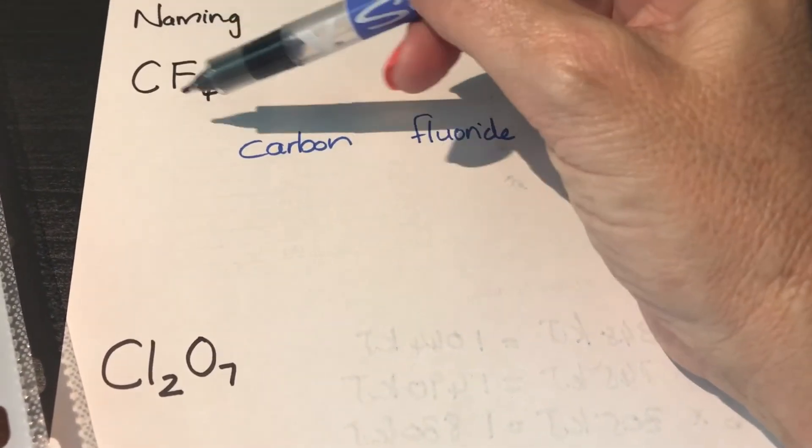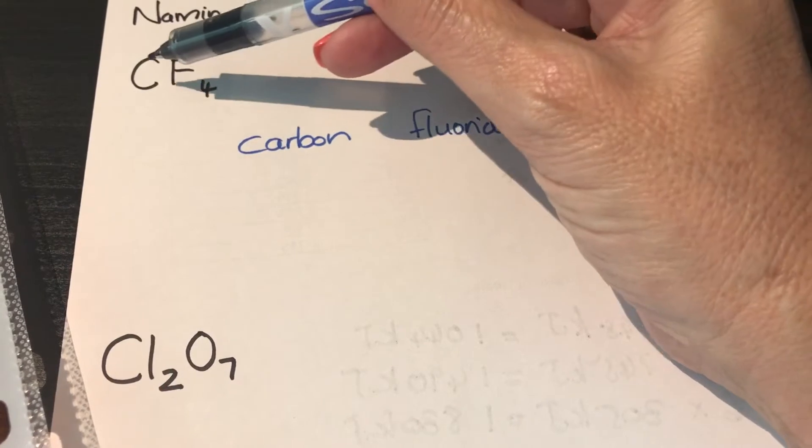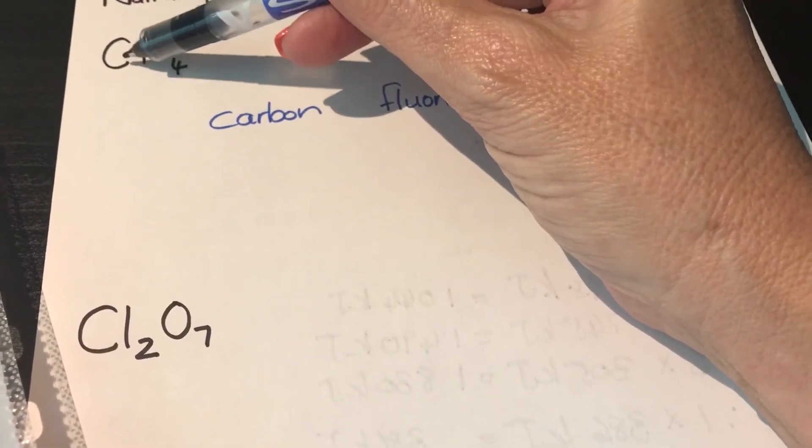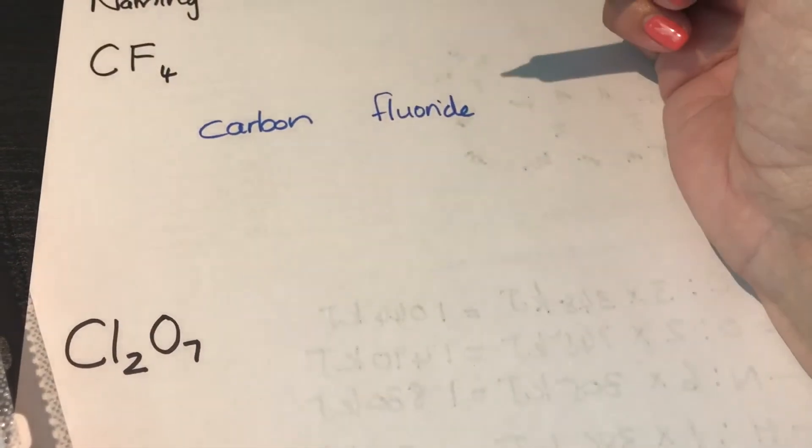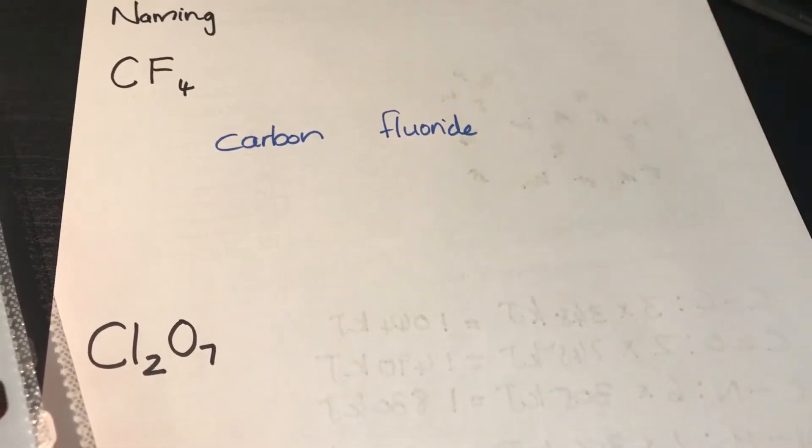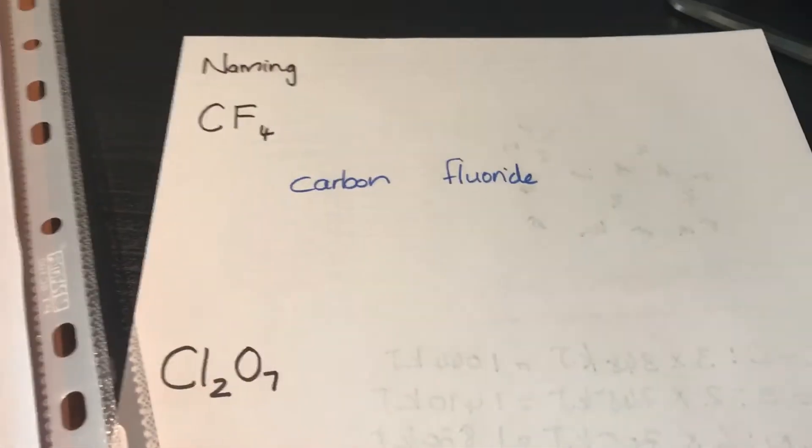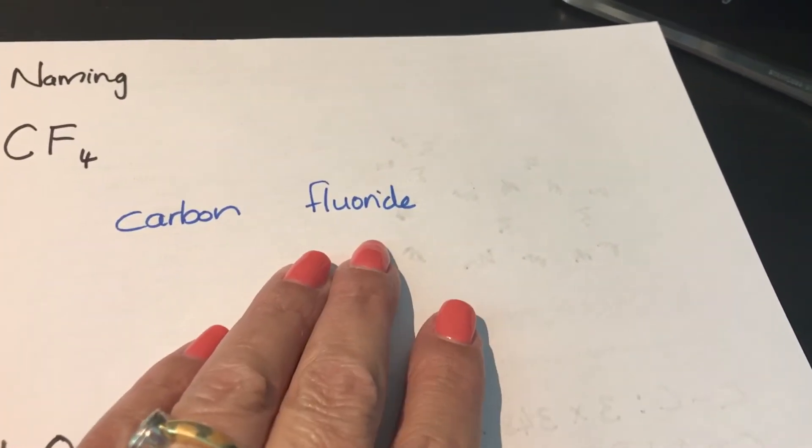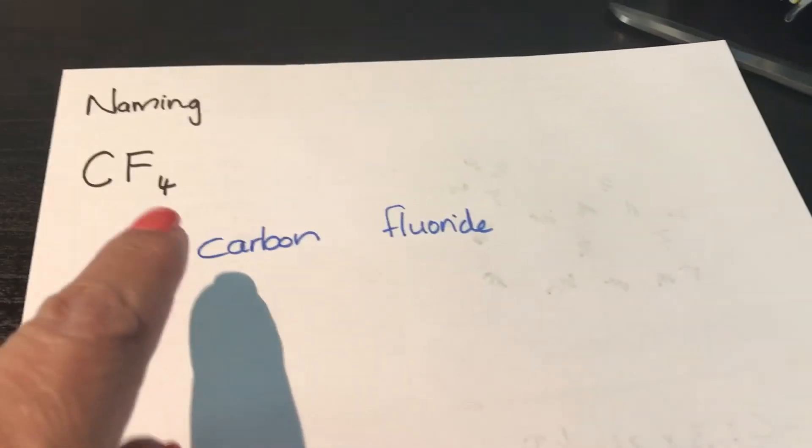But then I need to look at what else I have. If I don't have any numbers behind the carbon, the first element, it just remains carbon. We don't use the word mono. Mono is left out. We will only use the prefixes for the second element. Now, how many fluorines do I have?